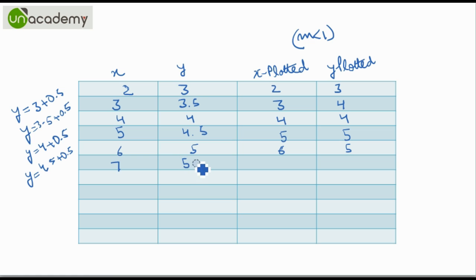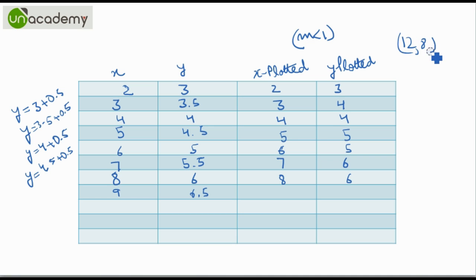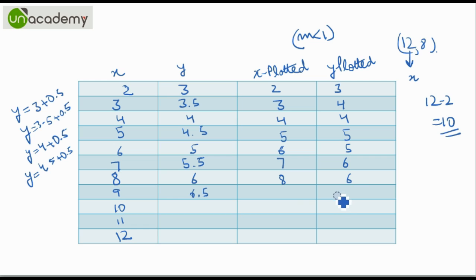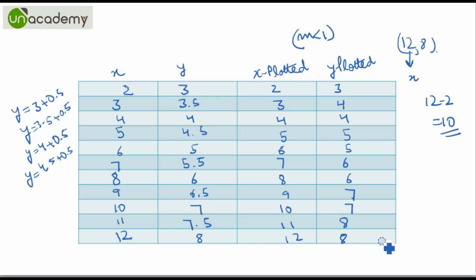We keep on doing the same procedure — calculating the new y by adding 0.5 to the previous y and rounding off — until we reach the endpoint, that is (12, 8). Since x has to become 12, we will have 10 iterations in total (12 minus 2). Continuing the procedure, we add 0.5 each time — for example, 6.5 plus 0.5 gives 7 — and we plot each point until we finally reach the required endpoint. That is how DDA plots the points.